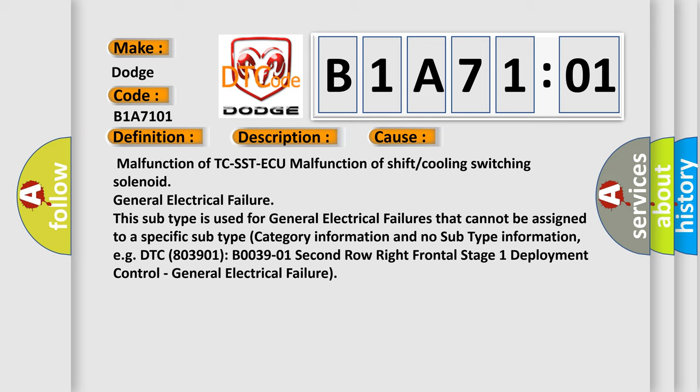For example, DTC B00391, B0039-01 Second Row Right Frontal Stage 1 Deployment Control - General Electrical Failure.